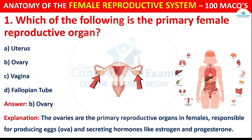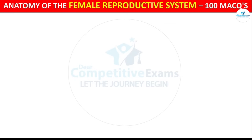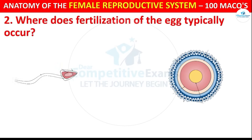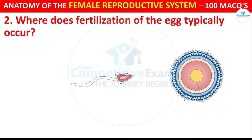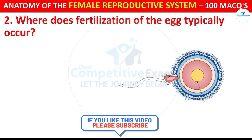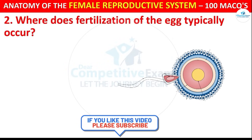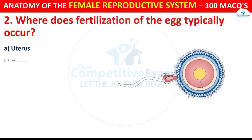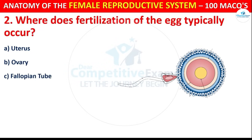Question number 2: Where does fertilization of the egg typically occur? Options are: Uterus, Ovary, Fallopian Tube, or Cervix.